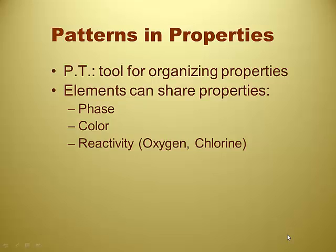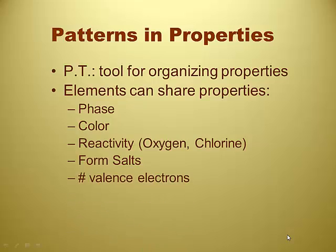Each group has a different reactivity with different elements, so some are reactive with oxygen in a certain way. Some are reactive with chlorine in a certain way — they can form salts. And how many valence electrons they actually have. We haven't talked about valence electrons yet, but we'll get there. There are probably dozens of things that we could pull out, but in regular chemistry, will we pull out dozens?